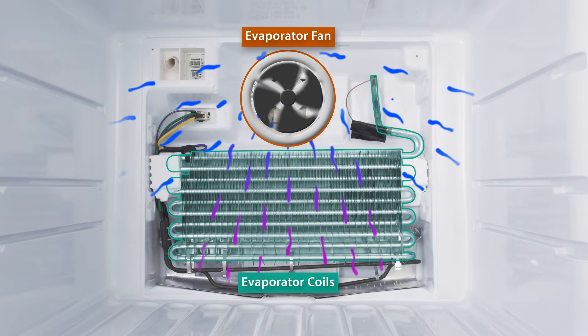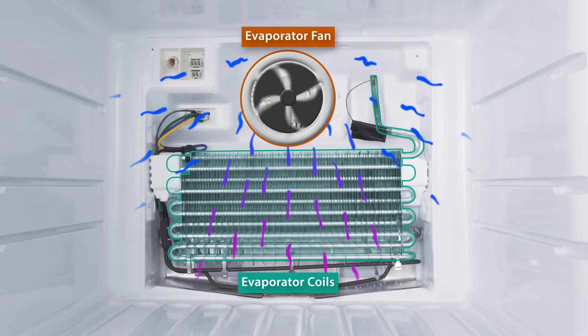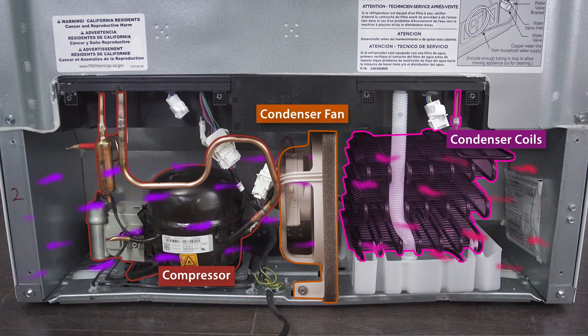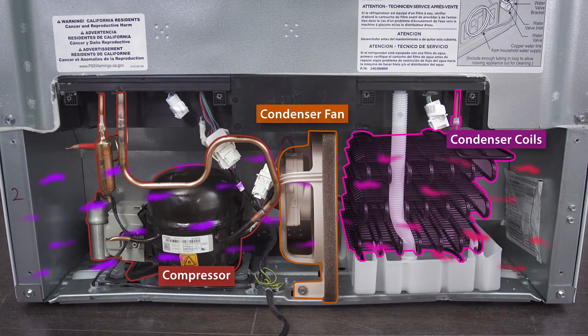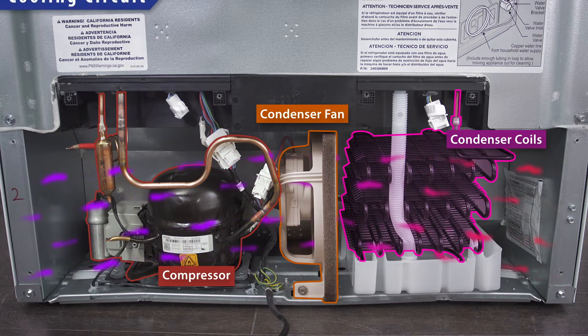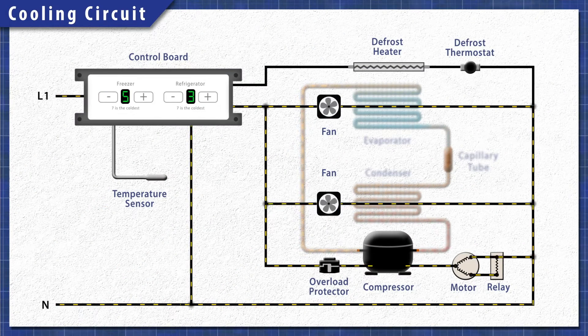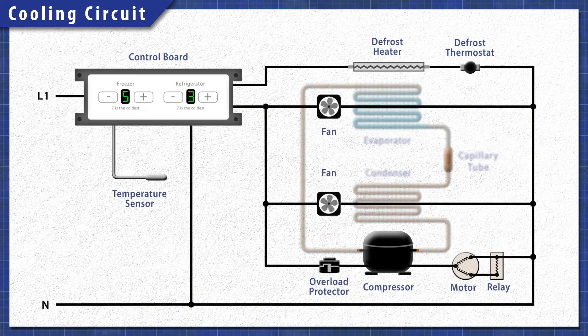In the freezer, heat is extracted by the evaporator coils and is released through the condenser coils behind the refrigerator. This process continues until the set temperature is reached.